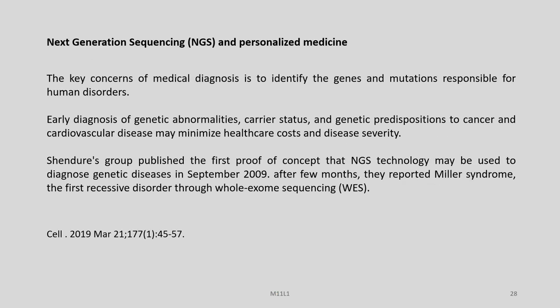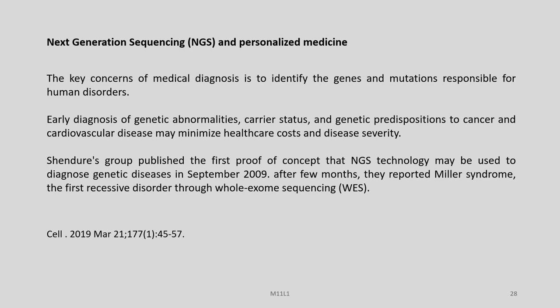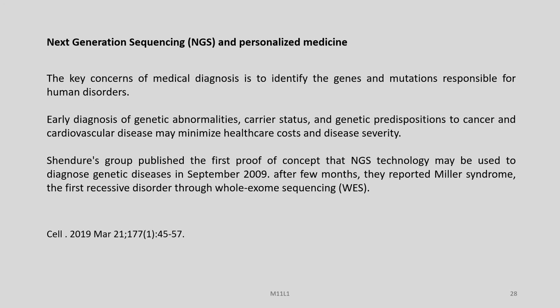The key concern of medical diagnosis is to identify the genes and mutations responsible for human disorders, and in this context NGS plays a very important role. Early diagnosis of genetic abnormalities, carrier status, and genetic predispositions to cancer and cardiovascular diseases may minimize healthcare cost and disease severity. San Diego's group published the first proof of concept that NGS technology may be used to diagnose genetic diseases in September 2009, and after a few months they reported Miller syndrome — the first recessive disorder diagnosed through whole exome sequencing. An individual — whether normal or diseased — is subjected to physical examination, transcriptomic, proteomic, and metabolomic analysis, family history is recorded, and genomic DNA is extracted for whole genome sequencing.